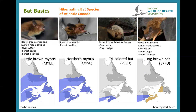Now let's go over the seven bat species you might expect in Atlantic Canada. The little brown myotis is the most common species, found basically all over Atlantic Canada but likely not in northern Labrador. It roosts in tree cavities and human-made cavities, meaning it can be found in attics and bat houses. It hunts in more open areas over water, along forest edges, and in forest clearings.